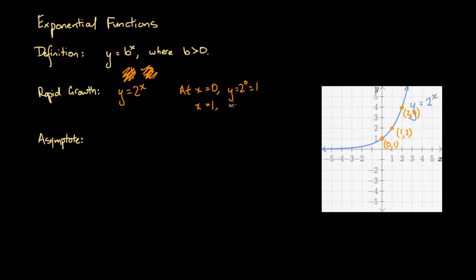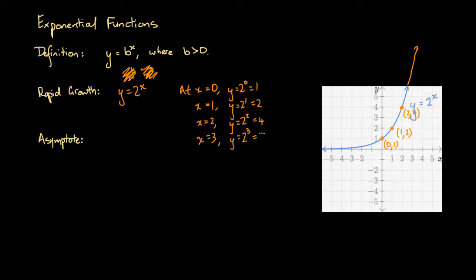At x equals 1, we've got y equals 2 to the power of 1. That's going to equal 2, because anything to the power of 1 is just itself. At x equals 2, we've got y equals 2 to the power of 2 — 2 times 2 is 4. If we said x equals 3, we'll have y equals 2 to the power of 3, which is 2 times 2 times 2, that's 8. So if this axis were to keep going, we'd have the point 3, 8.